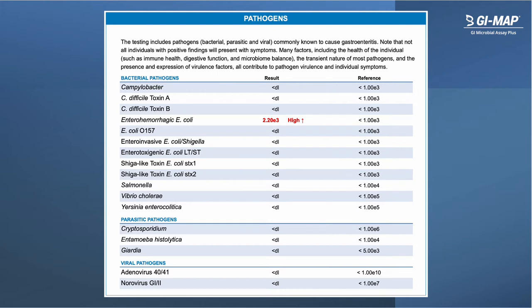Also note that for C. diff as well as additional pathogens, we are detecting toxin genes, which provides additional information on potential pathogenic strains present in the stool sample. It's important to note that GI Map is based on DNA detection — we're looking at the gene level, not the protein level, so we're not able to determine whether or not the genes are actually being actively expressed. This represents a potential infection, and as always, it's important to consider symptoms.